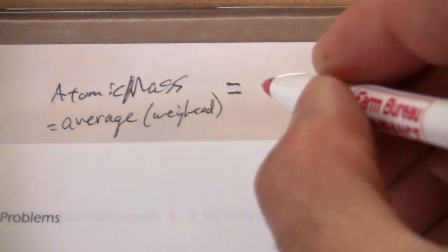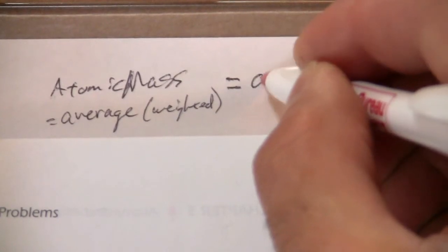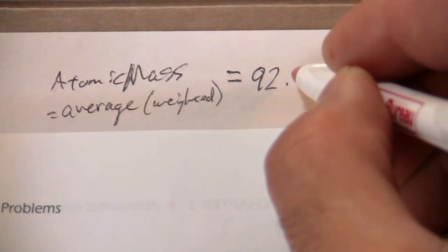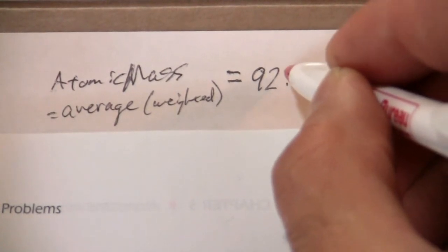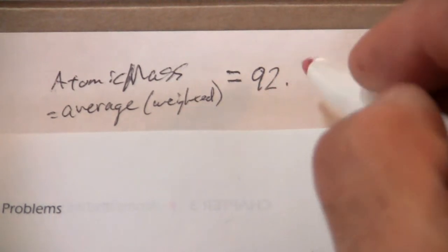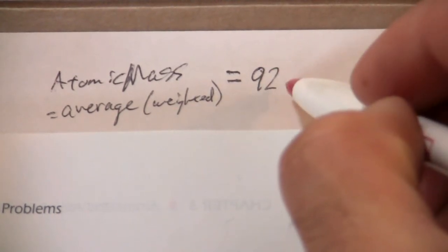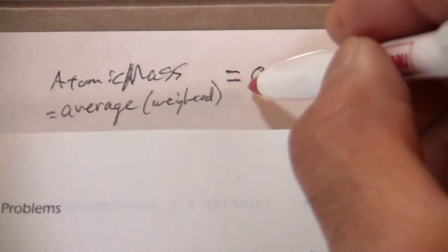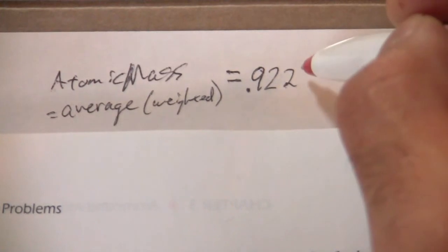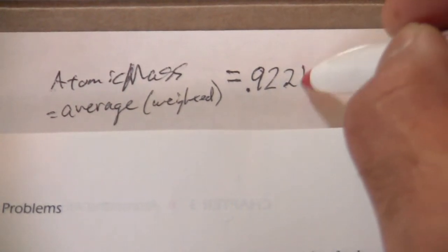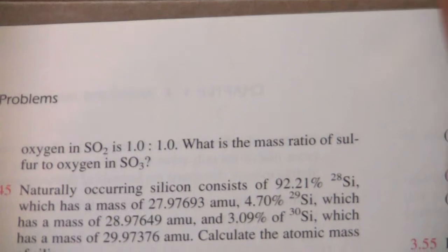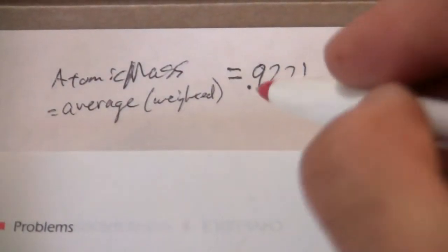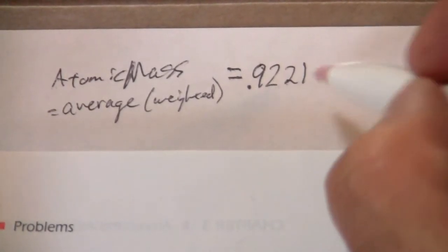So what we can say is that if 92.21%, and I'm going to write this as a decimal. We need to put this as a decimal. So if this is percent, we just divide by 100, which makes the decimal move two places over to the left. That will be 0.9221 and now it's no longer percent, it's just a decimal. So that's the first thing we need to do is convert these numbers into a decimal.